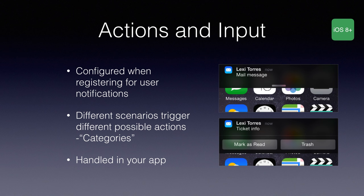iOS 8 brought the concept of actions — basically buttons. Actions are defined by you the developer and configured when you register for notifications. Actions fall into what are called categories, but I'd like to call them scenarios. For example, the scenario of a new email has actions like Mark as Read and Trash. You might have scenarios for a calendar invite, a new tweet, or a new favourite — these all trigger different actions. As the user taps the buttons, it kicks off a delegate method inside your app.